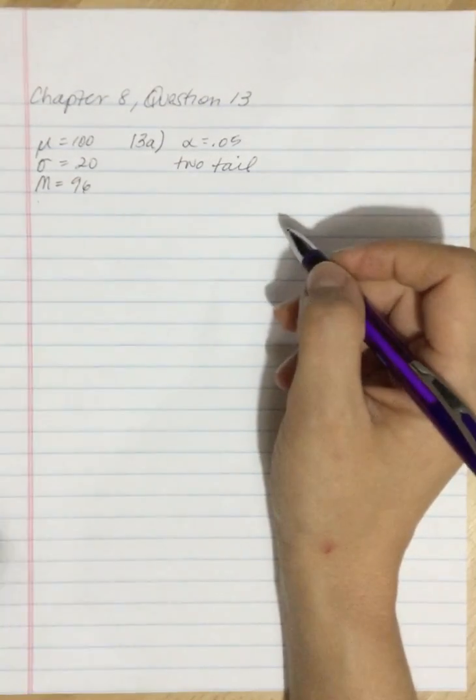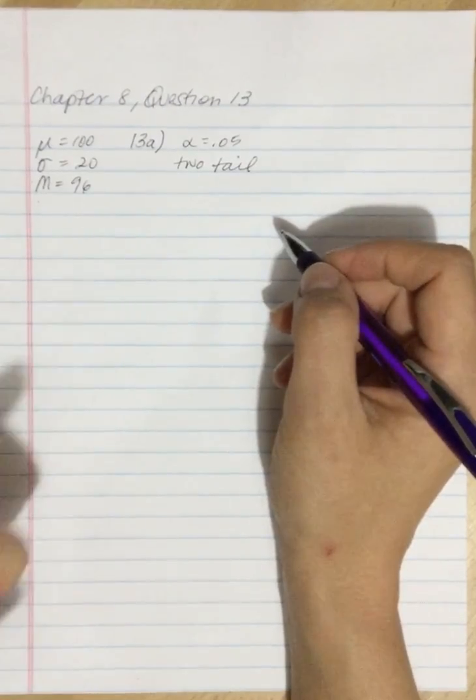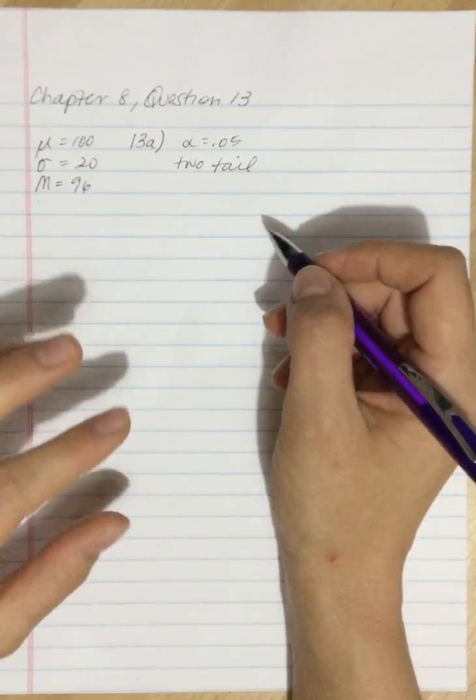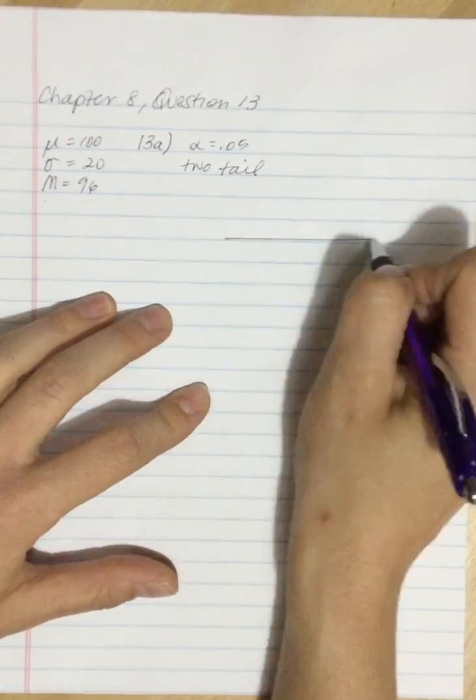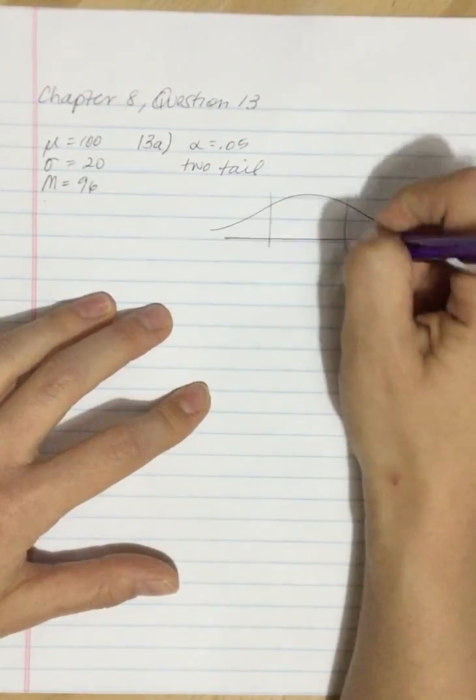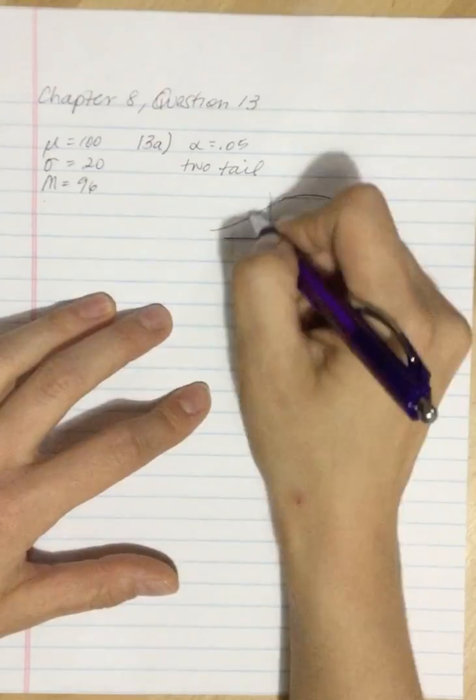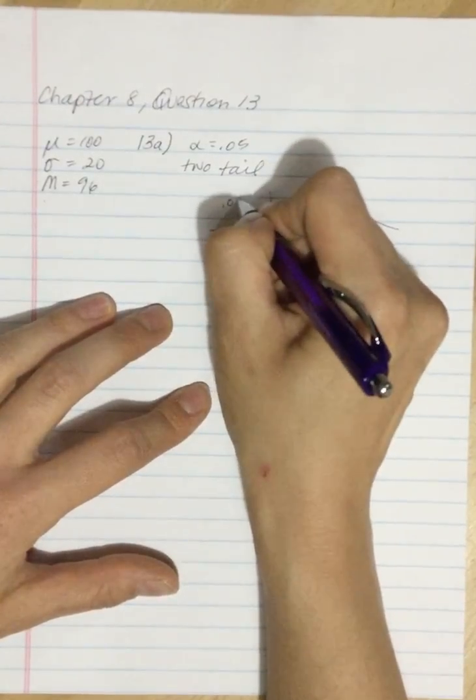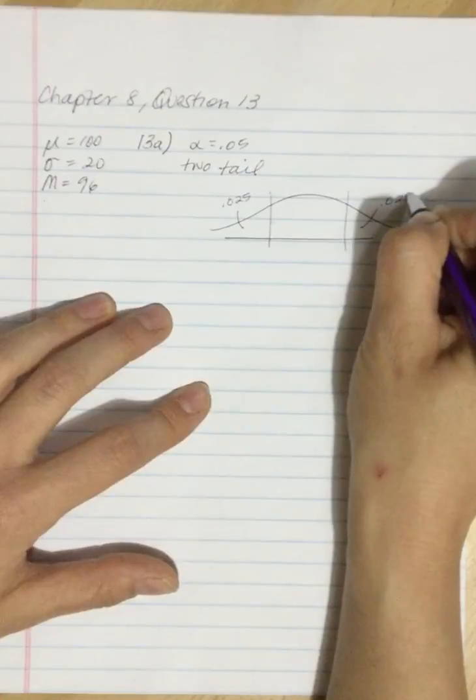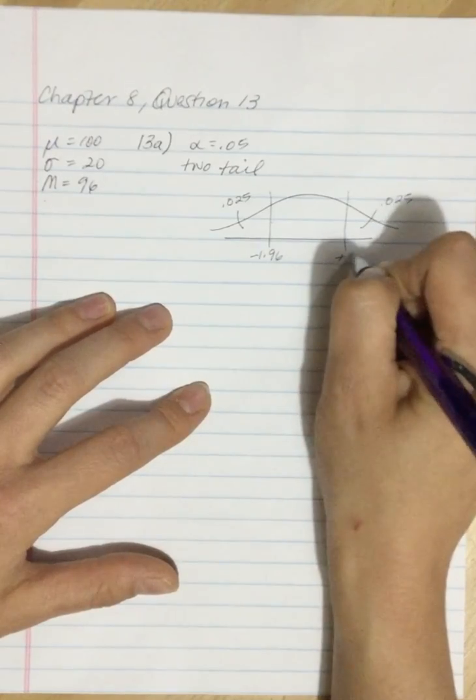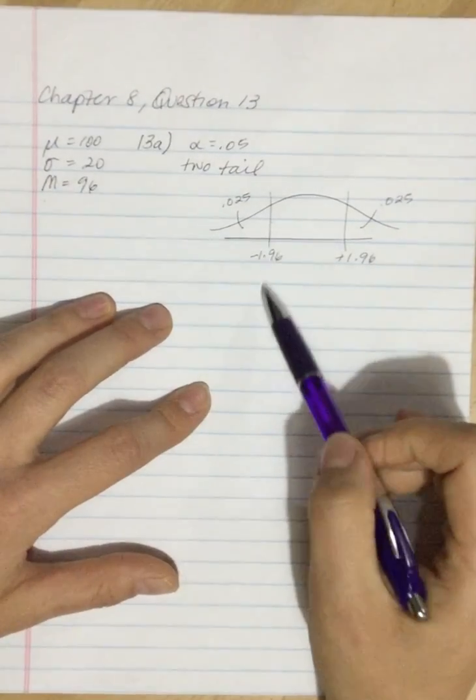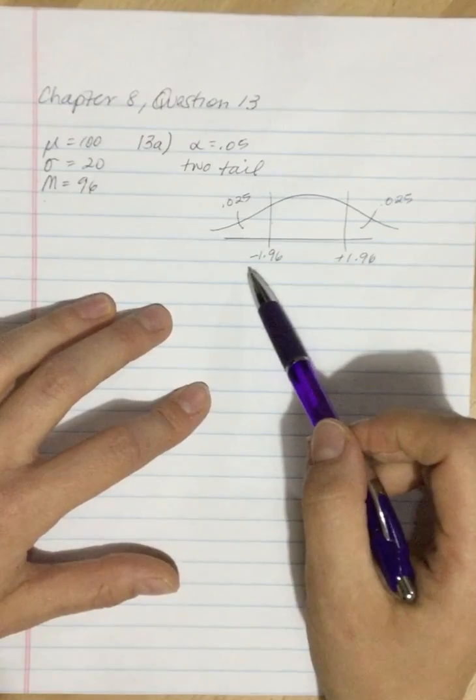So what we need to do is work backwards to find the sample size. The first step is to figure out what value of a Z-score would be sufficient to reject the null. If we go to the back of the book and look at table B1, we find that if we want 0.025 here and 0.025 here, these critical values are negative 1.96 and positive 1.96.